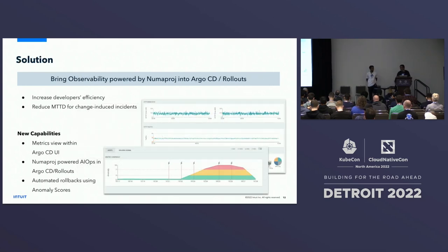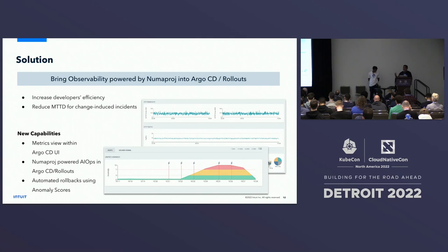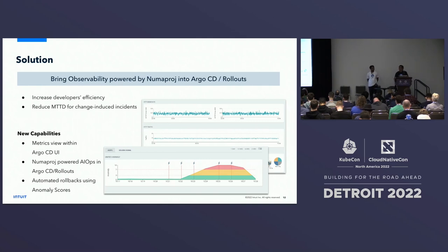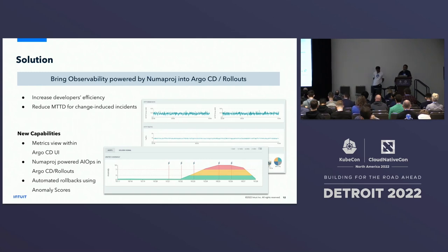The solution was to bring our AIOps-based observability into Argo CD and Rollouts. We did three things. One, we added a metrics tab to Argo CD so that as soon as you deploy, you can check whatever metrics are relevant to the application right there. Two, instead of going through hundreds of metrics and making a manual judgment, we run a multivariant model powered by Muma Proj that gives you one signal indicating the quality of your change — whether it's good or bad. Three, we removed the human from the equation: we integrated with Argo Rollouts so that if the change is bad, it automatically rolls back. That has helped us reduce MTTD and MTTR.